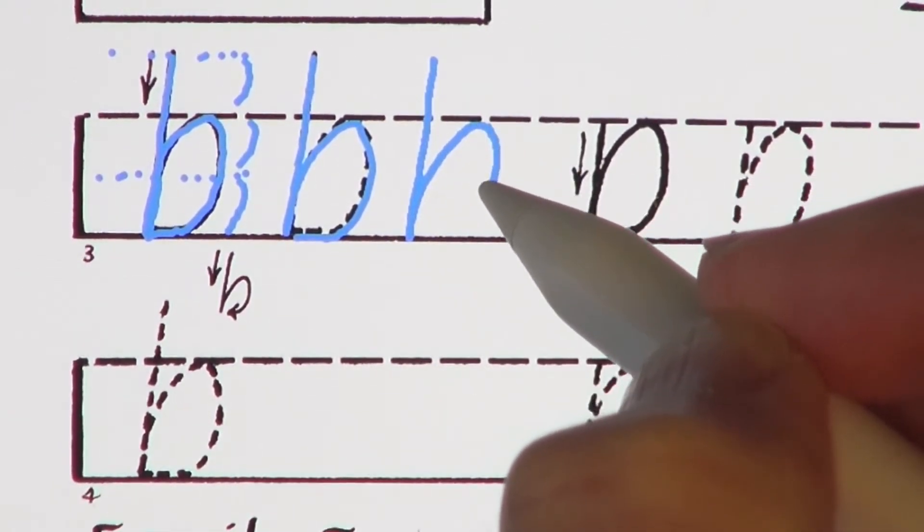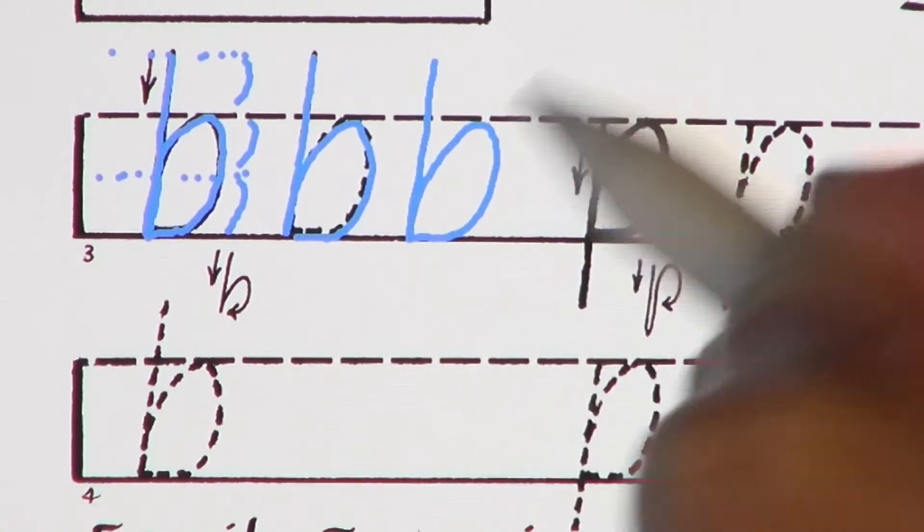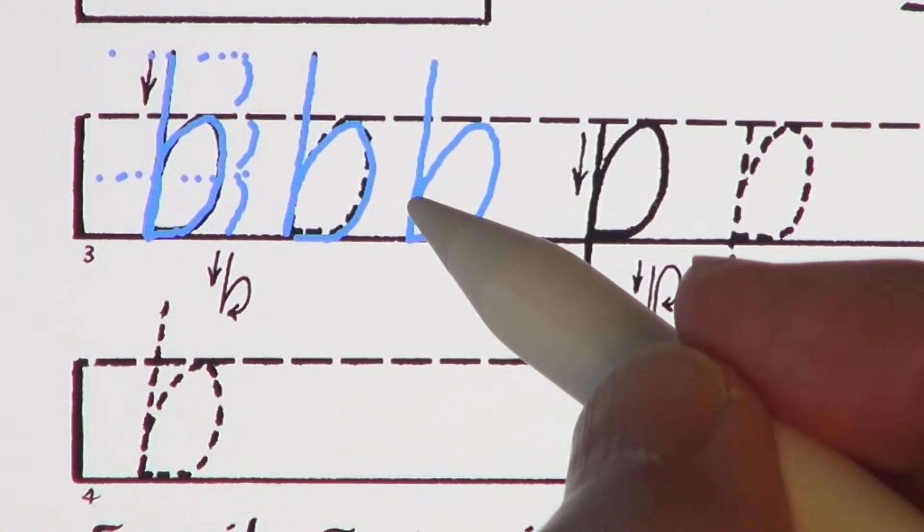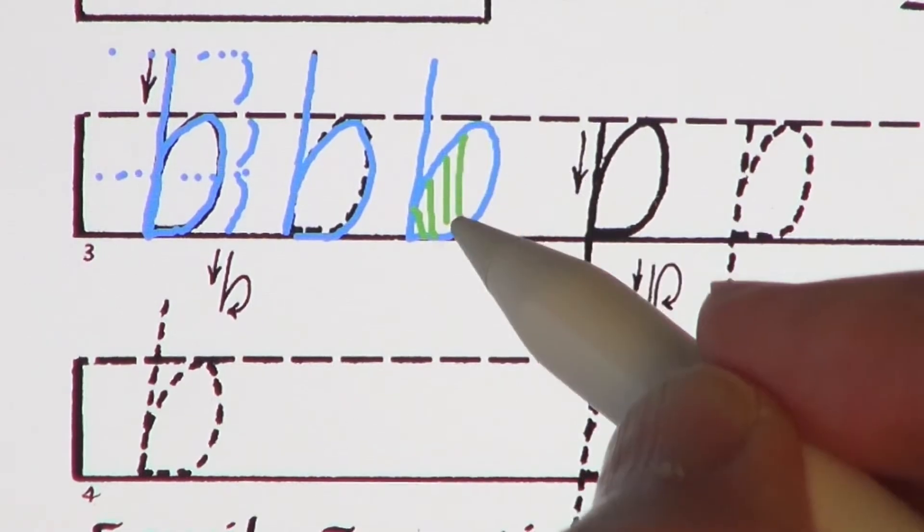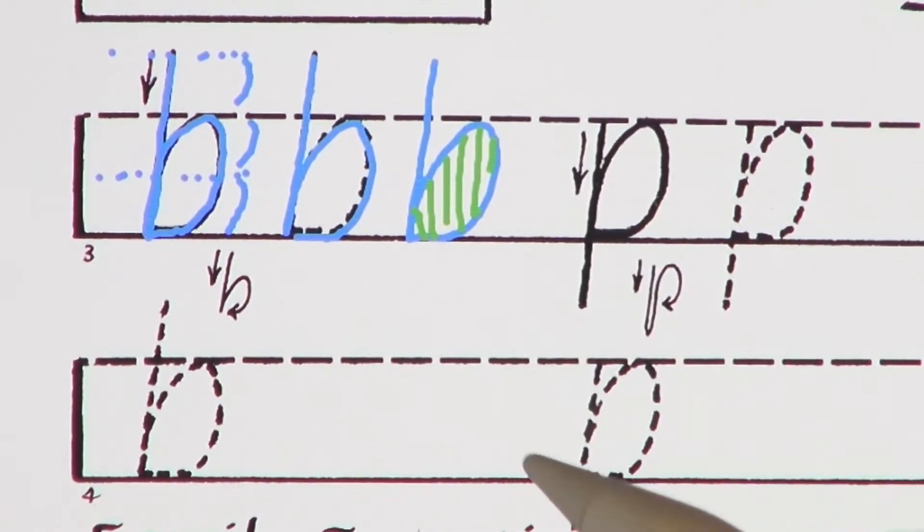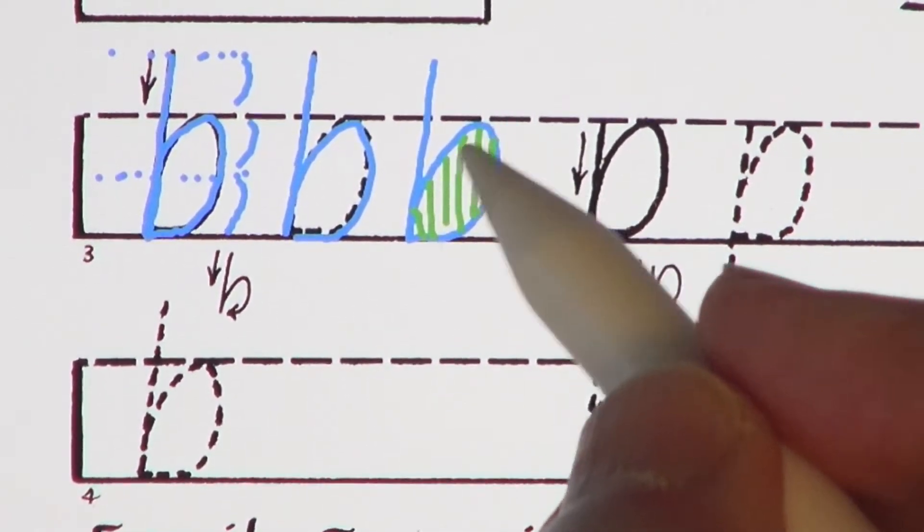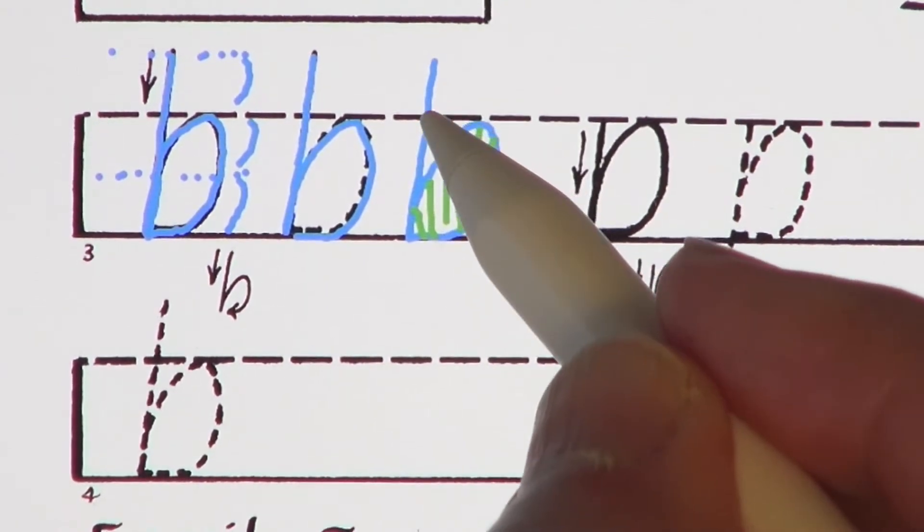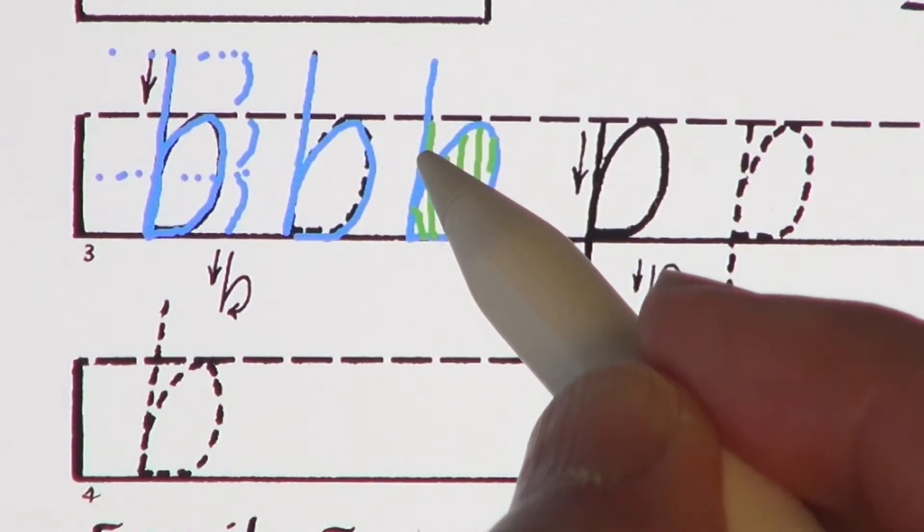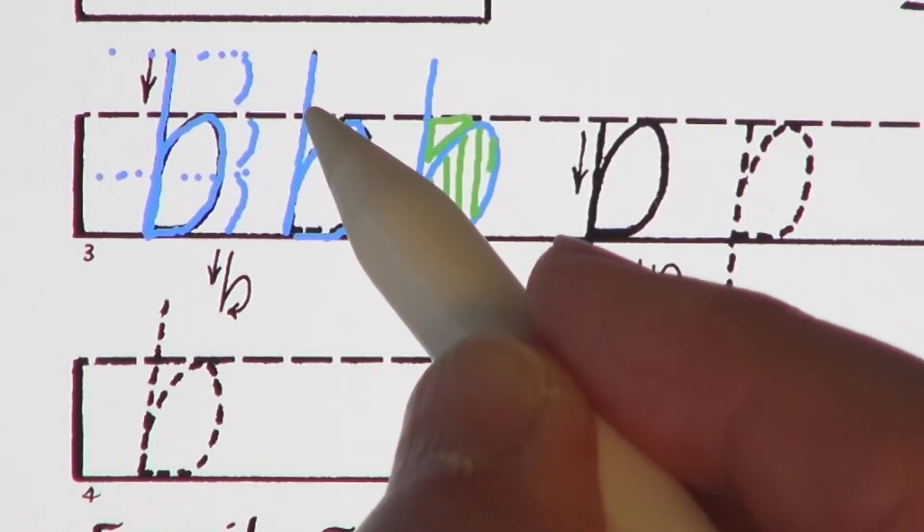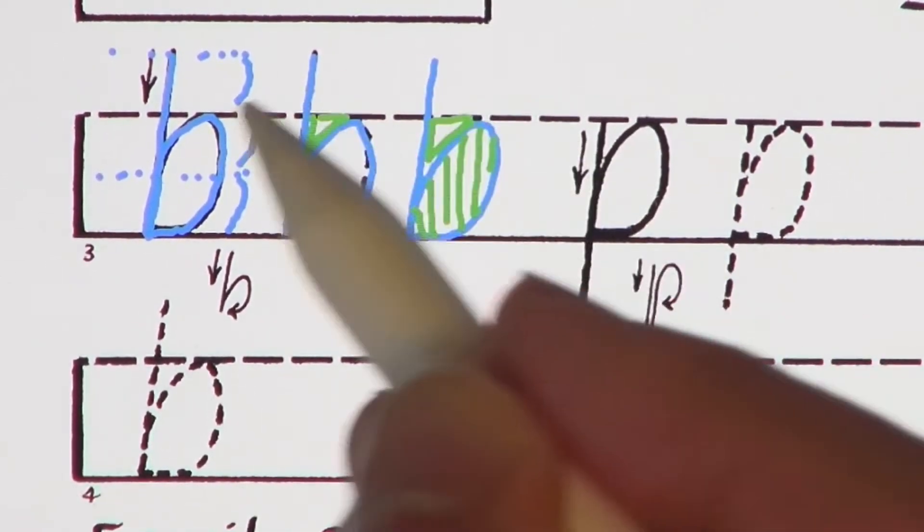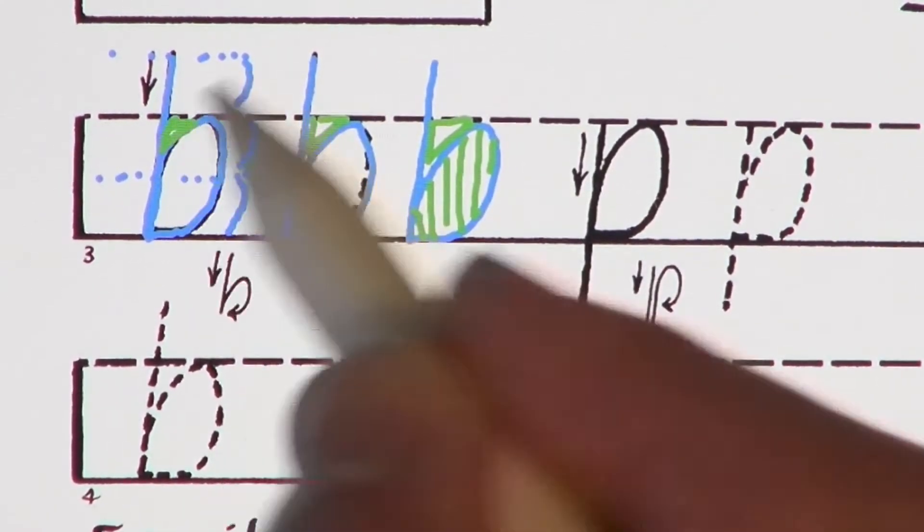Look at the counter shapes within a letter. The space between the lines of your letter helps make it legible. The lowercase b has two counters, the large internal oval-like shape and the little triangle. All italic inverted A-shape letters contain these signature counter shapes.